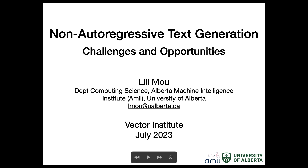Thank you for the introduction. Today my talk is on non-autoregressive text generation — challenges and opportunities. I'm an assistant professor at the Department of Computing Science and also AIME. AIME is a sister institute of Vector and Mila — we have three AI institutes in Canada. We are slightly less known than Mila or Vector, but we have a lot of AI faculty members. We're also very close to the Canadian Rockies — you can do a day trip into the mountains.